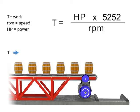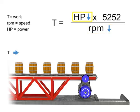Similarly, the opposite is true. If we wish torque to remain constant and decrease speed, then the horsepower of the motor also decreases.